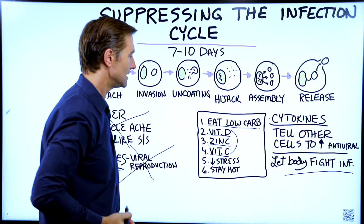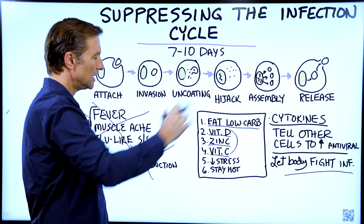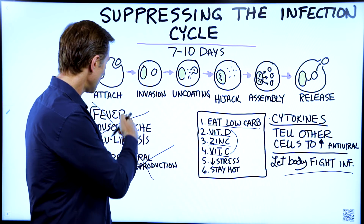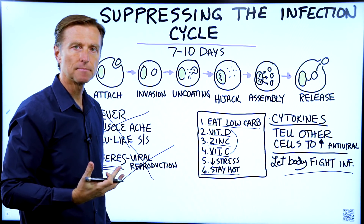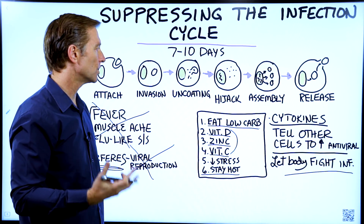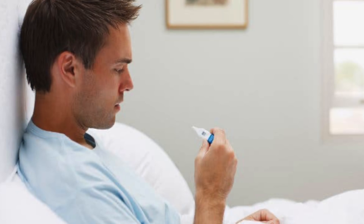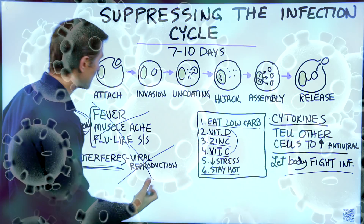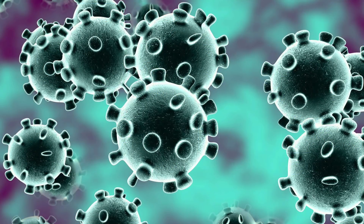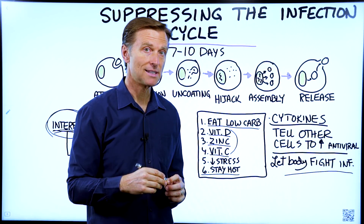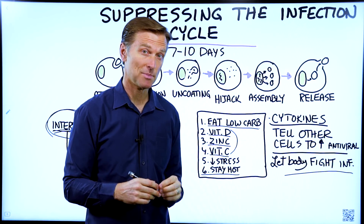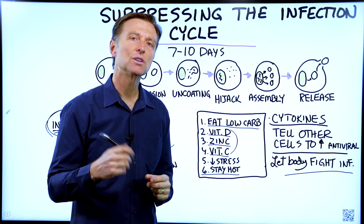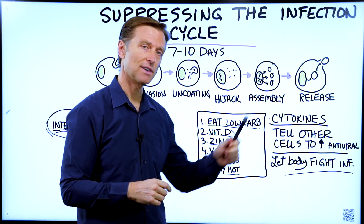Keeping your stress down is also important because stress will prolong the infection. As far as the fever goes, you want to stay hot — take a hot shower, wear extra clothes when going to bed — to speed up the process, because fever is generated as an antiviral action to suppress the reproduction of viruses. A lot of people have these symptoms and automatically try to get rid of them without understanding what's happening. If you want more information about how to boost the immune system, check out this video.